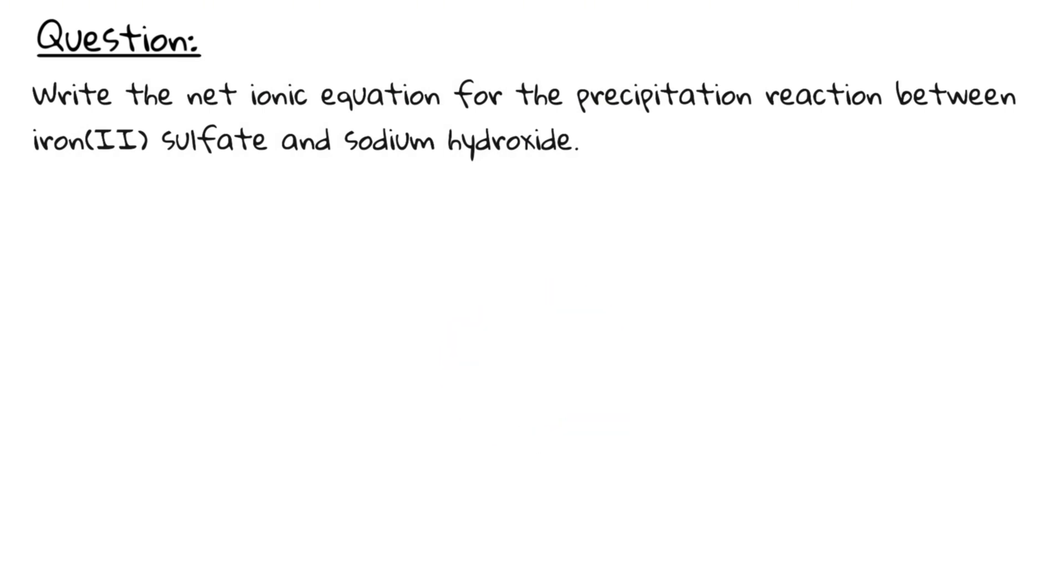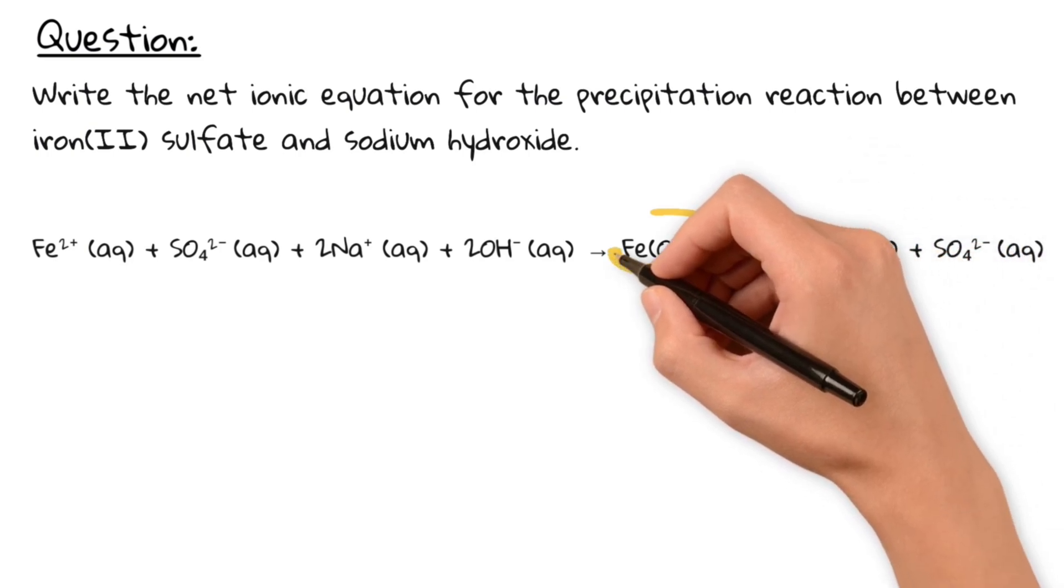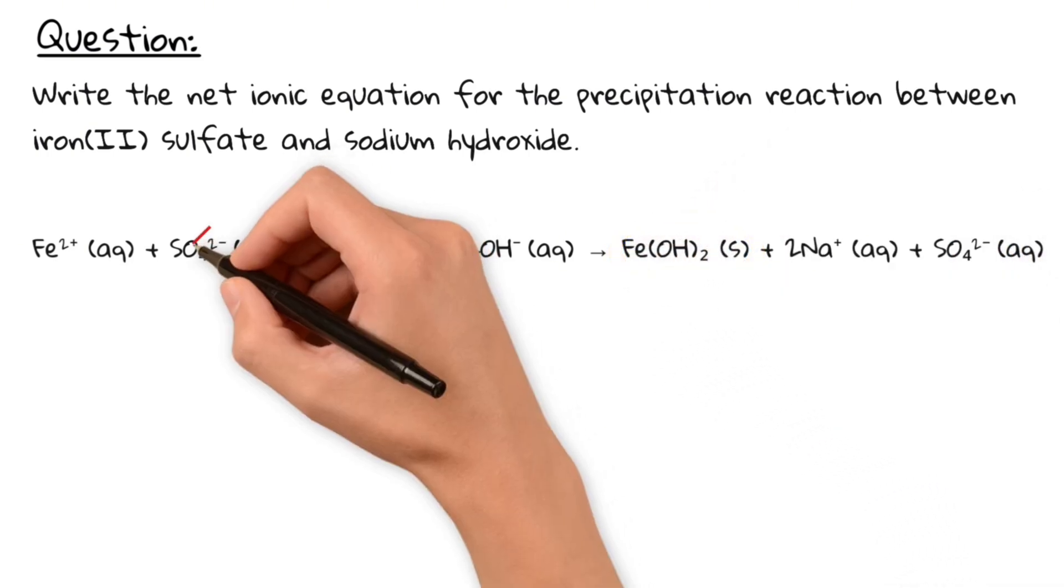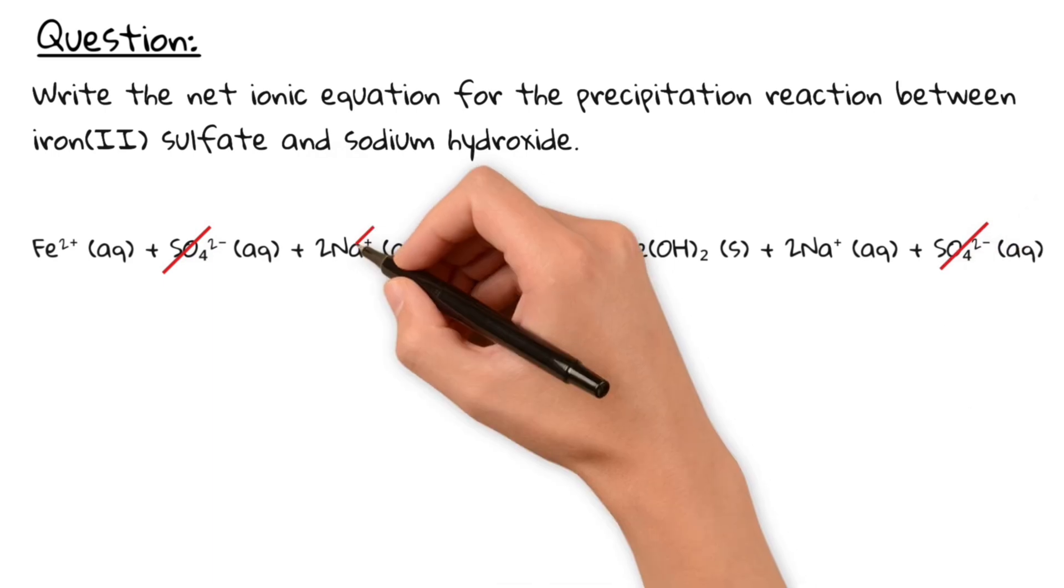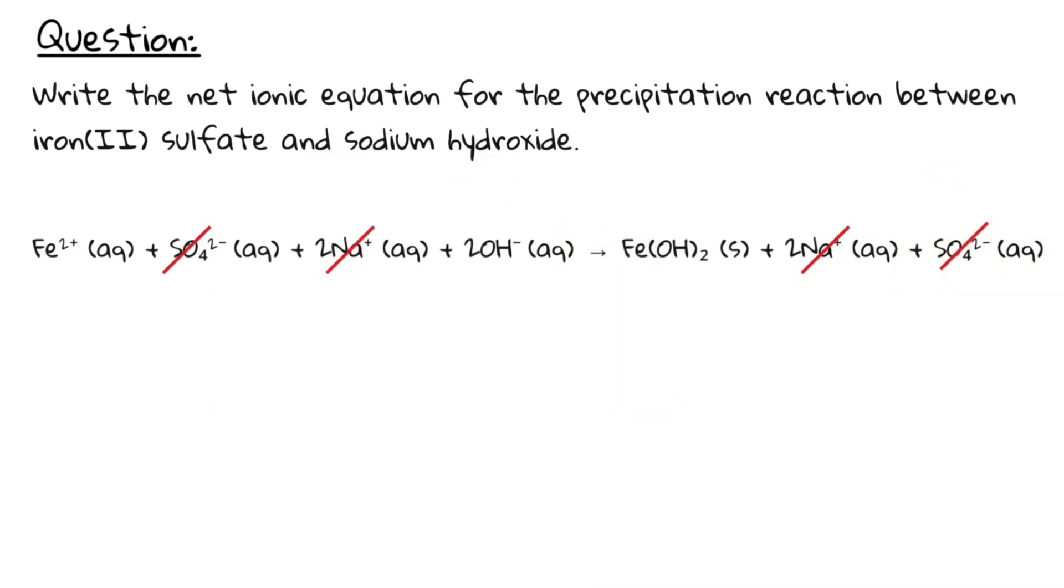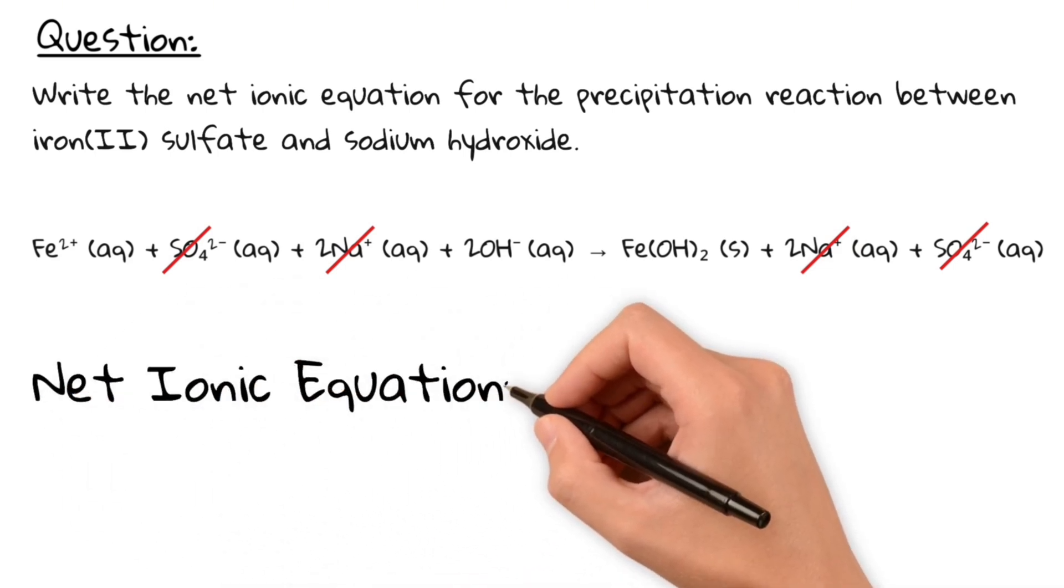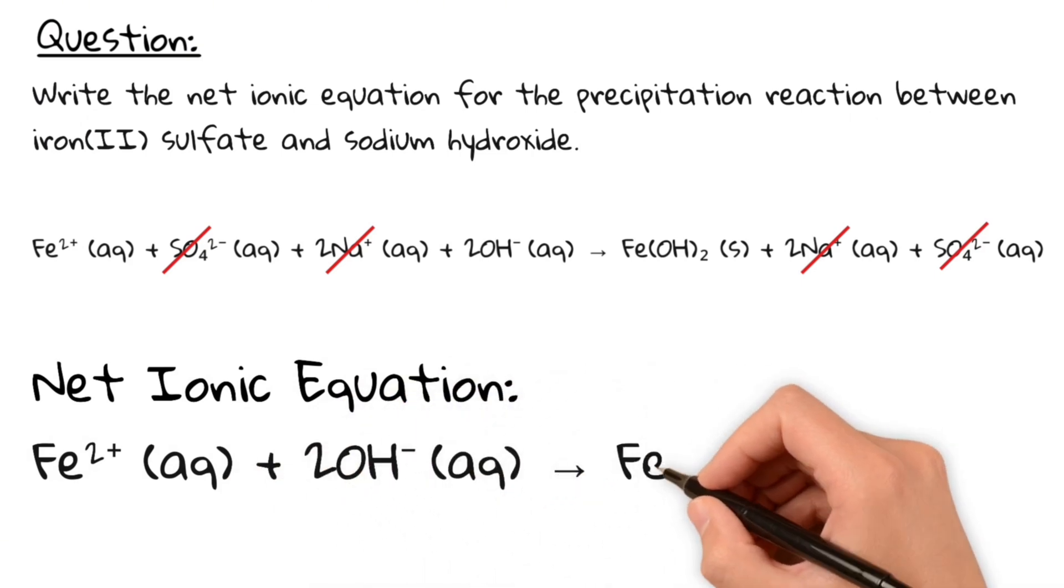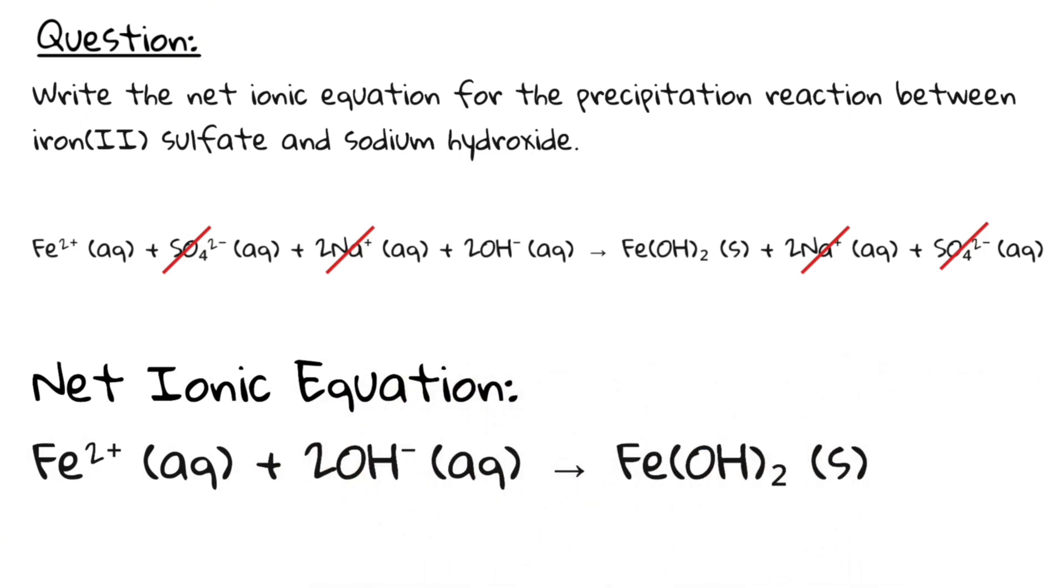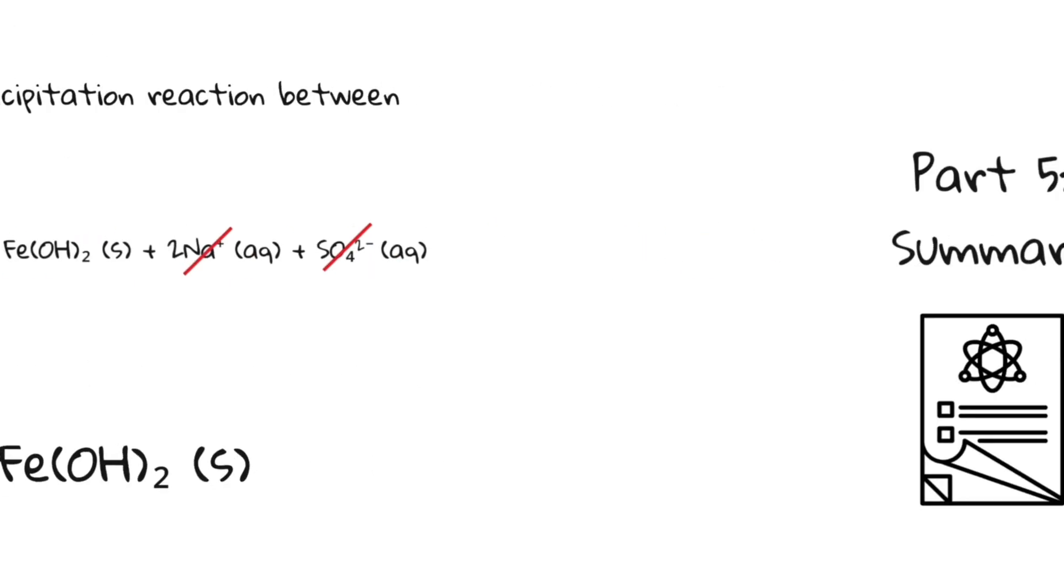Step 1. Write down the full equation with state symbols. As we just discussed, most hydroxides are insoluble, so iron-2-hydroxide will precipitate. Now, we cancel the spectator ions. Sodium and sulfate are unchanged on both sides, so they have to go. Now, we are left with the net ionic equation. Iron-2-plus 2-hydroxide reacts to iron-2-hydroxide. And that's the answer. For precipitation reactions, you only show the ions that actually form the solid precipitate.